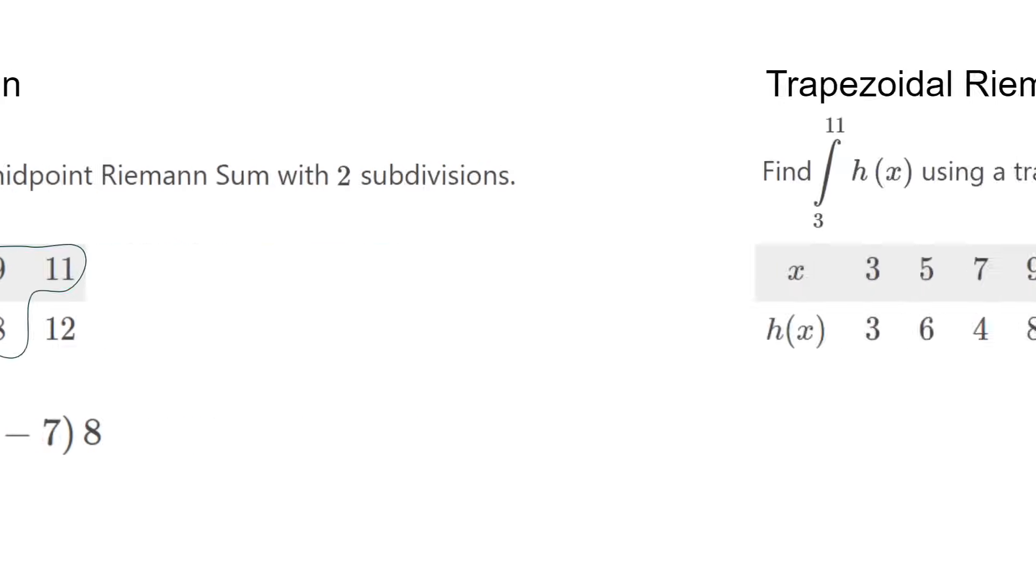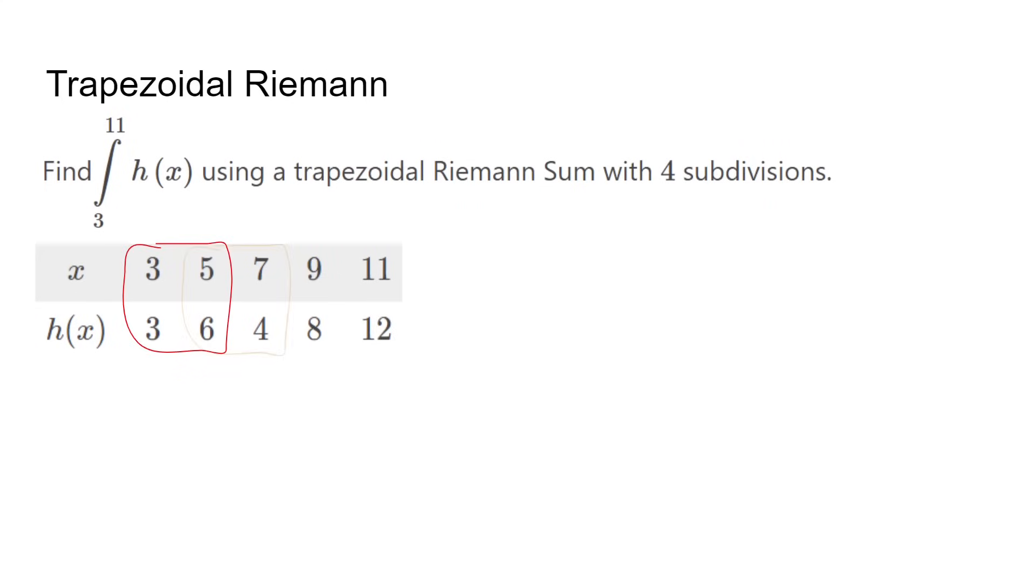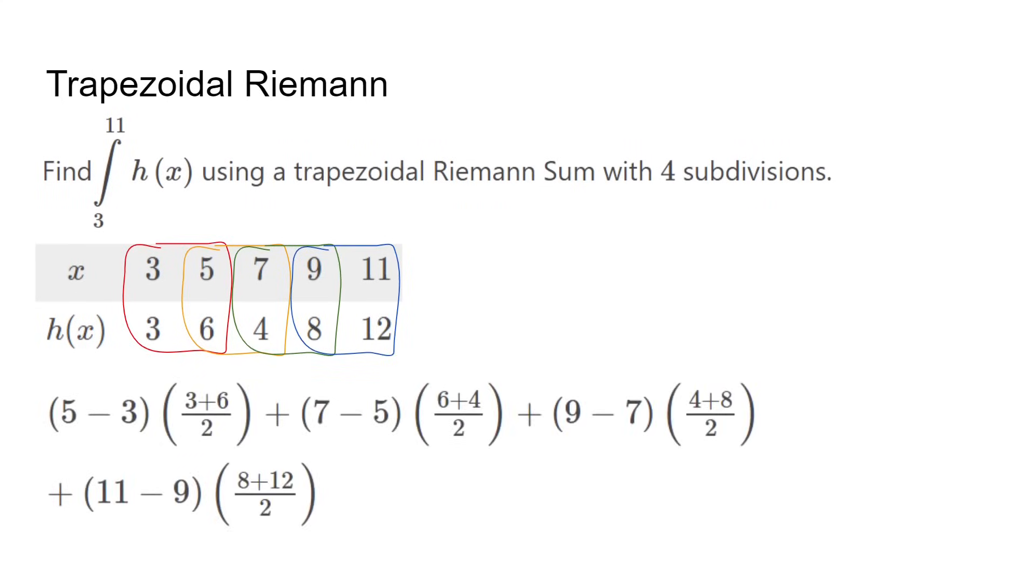Lastly, a trapezoidal Riemann uses a square shape. To get the width, we subtract the x values. The height will be the average of the two y values, which is identical to the formula of a trapezoid's area. Once again, we add the sum of them to find the estimated area.